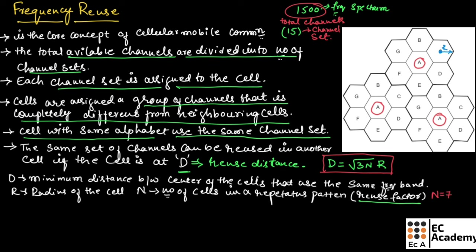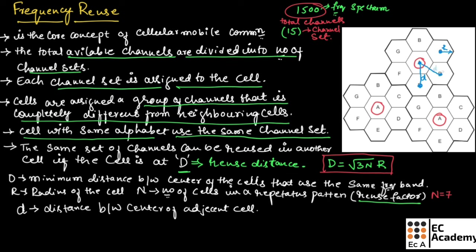We will take one more distance, which we call small d, which is the distance between the centers of adjacent cells. From the center of A to the center of E, from center of A to center of D, or from center of A to center of G — this distance is known as small d. Small d can be represented as d = √3 × R. This is the formula for small d.